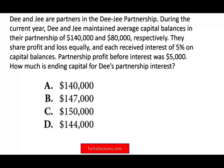D and G are partners in the DG partnership. During the current year, D and G maintain average capital balances of $140,000 and $80,000 respectively. They share profits and losses equally. Each receives 5% on their capital balances. Partnership profit before interest was $5,000. How much is the ending capital balance for D?